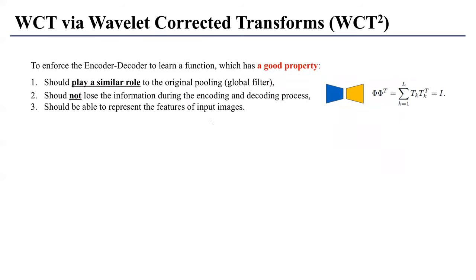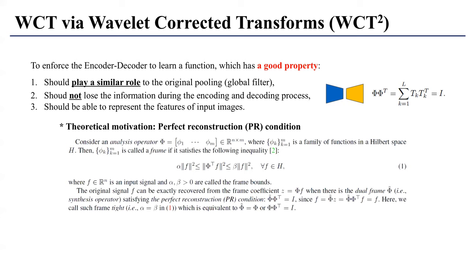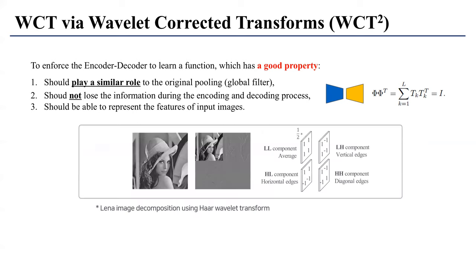So how do we do this? The key intuition is to constrain the function space of the network to have a property called the perfect reconstruction condition. What it says is: we need the network to learn a good filter which is invertible. For example, max pooling is never invertible because it is already losing three quarters of the information. A better substitute is the Haar wavelet, which is guaranteed to satisfy the perfect reconstruction condition, making it invertible without any loss of information, and it is known to encode and decode good features in the image domain.